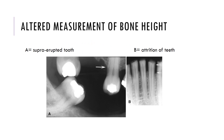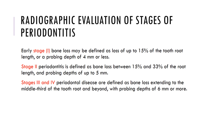Altered measurement of bone height occurs in cases where, for example, the tooth is either supraerupted or attrited, and you do not have the CEJ to use as a reference point for amount of bone loss. Radiographic evaluation of different stages of periodontitis can be done as follows: early stage or stage 1 bone loss is defined as up to 15% of root length loss, or a probing depth of 4mm or less.